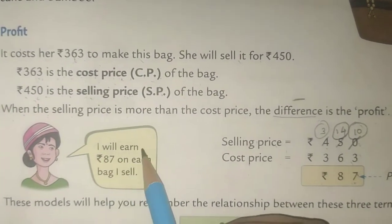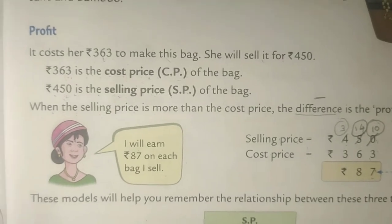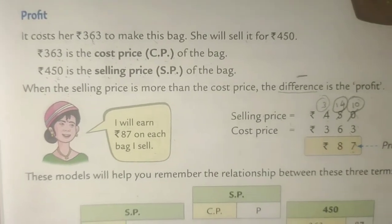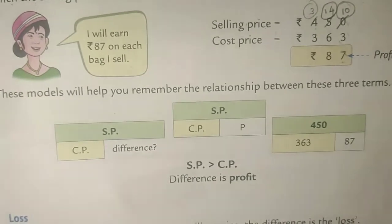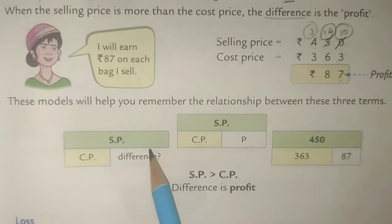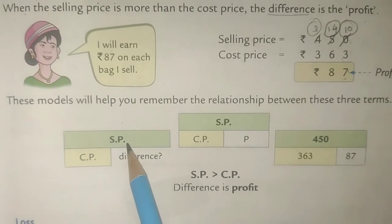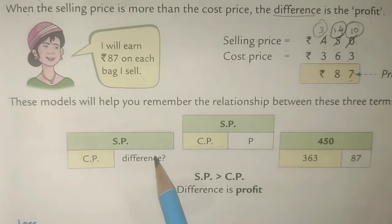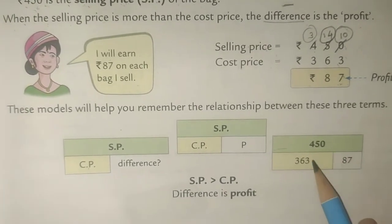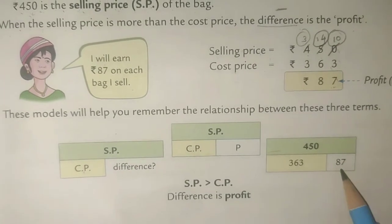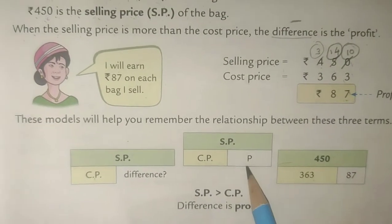Bimla says, 'I will earn 87 rupees on each bag I sell.' In the model shown, the long rectangle represents the selling price and the shorter one represents the cost price. Selling price is 450, cost price is 363, and the difference is 87 — so it is a profit because the selling price is more than the cost price.